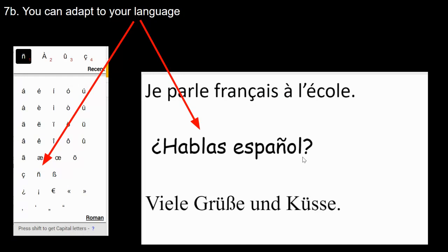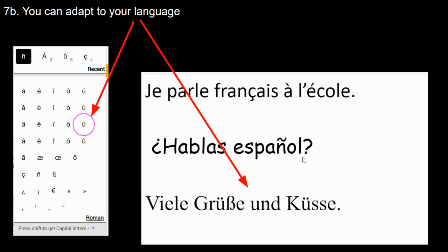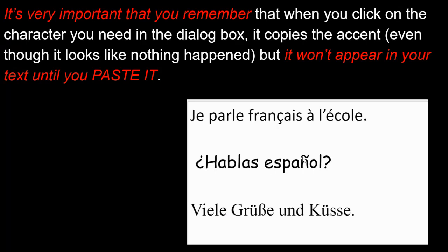You can adapt this to your language. For instance, you can click the inverted question mark for Spanish text, the N with a tilde for 'español,' a U with an umlaut, or an Eszett for German.